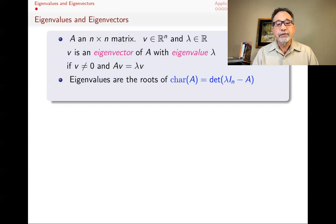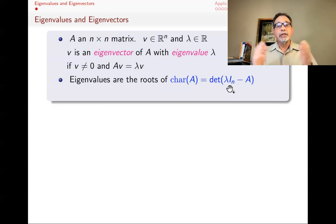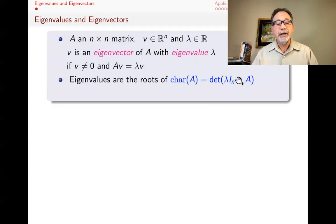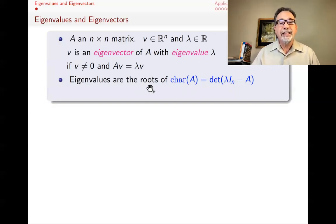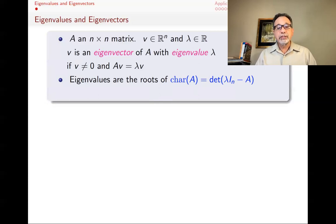Eigenvalues are the roots of the characteristic polynomial — that's the determinant of lambda I minus A. Lambda I minus A is an n by n matrix. I is the identity matrix; when you multiply it by lambda, you get the n by n matrix that has lambdas down the diagonal. When you subtract A from that, you still get an n by n matrix. The determinant of that is called the characteristic polynomial, and the eigenvalues are the roots of that.